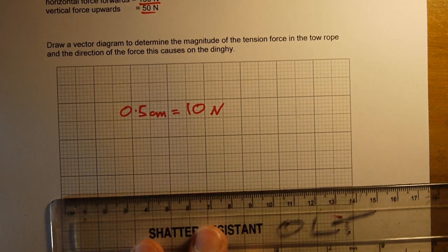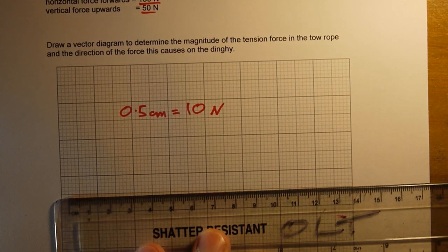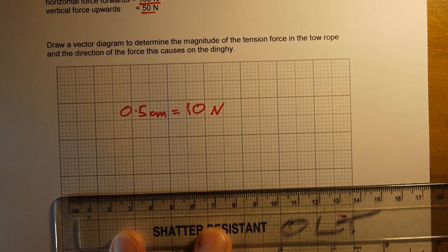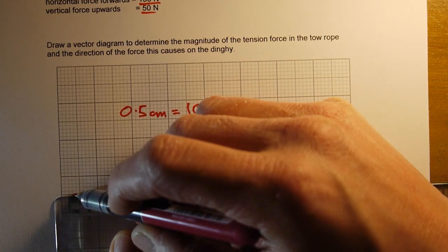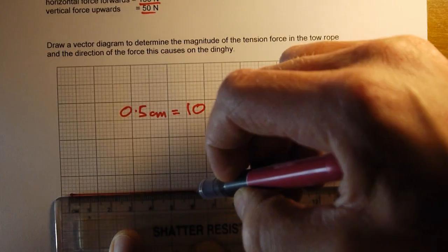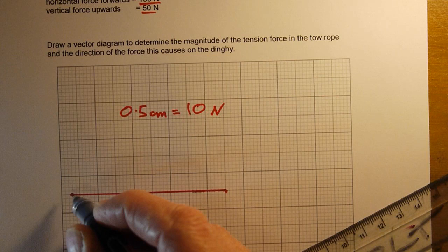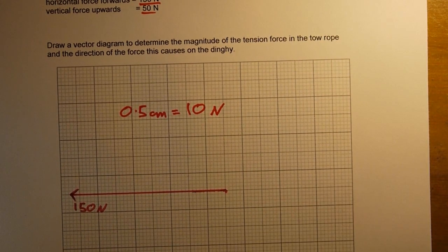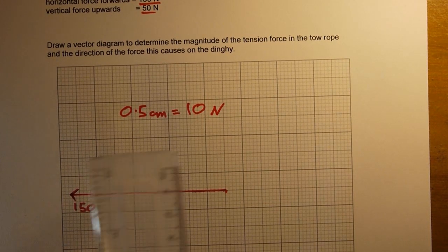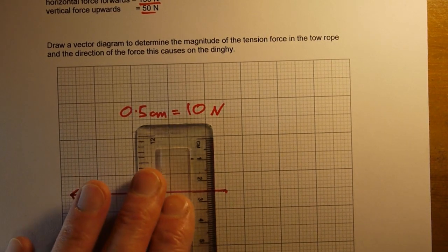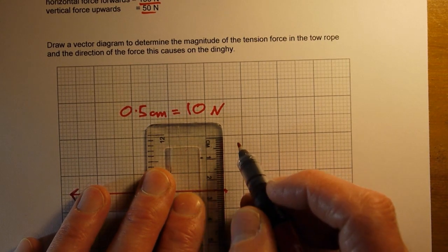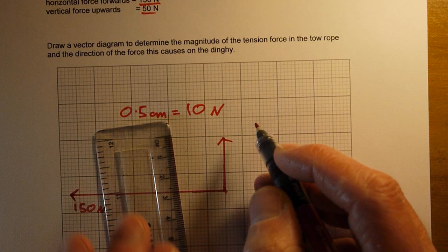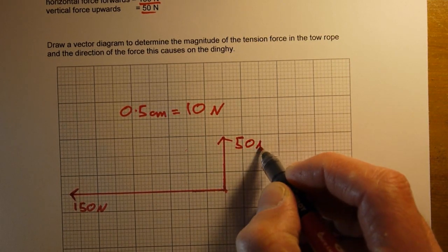For my horizontal component, we'll start at where two grid squares cross. I'm going to draw a line of 7.5 centimeters to represent my 150 newtons horizontal force and put an arrowhead on that, and make sure we label that 150 newtons. Then I'm going to draw my vertical force which will have a length of 2.5 centimeters, and again we label that as 50 newtons.